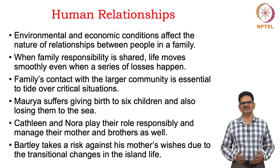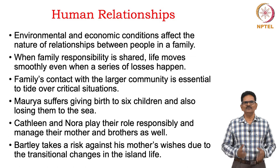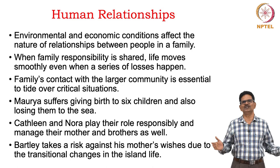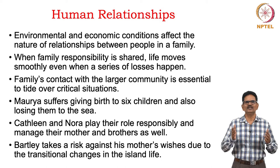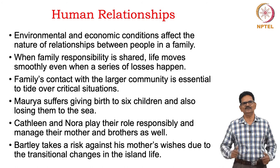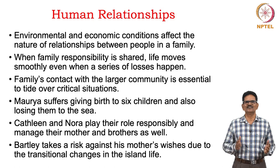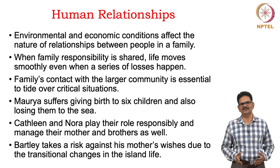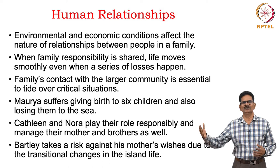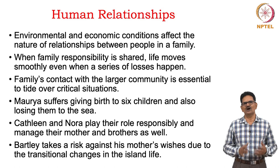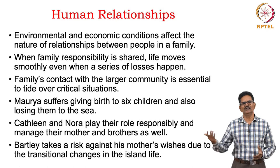Environmental and economic conditions affect the nature of relationships between people in a family. When family responsibility is shared, life moves smoothly even through a series of losses. The family's contact with the larger community is essential to tide over critical situations. Maurya suffers giving birth to six boys and loses all of them to the sea. Kathleen and Nora play their roles responsibly, managing their mother and brothers. Bartley takes a risk against his mother's wishes due to transitional changes in island life, influenced by the mainland, and on his way to the fair, he dies.